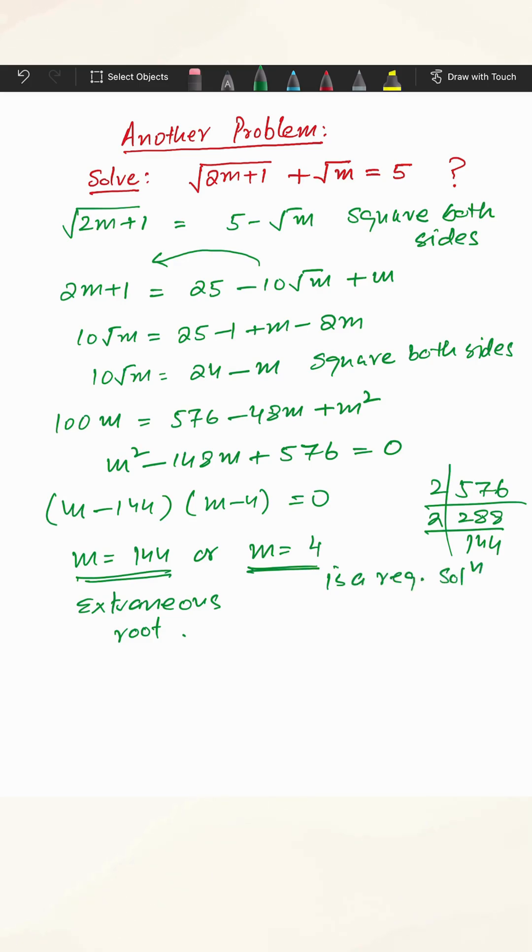If you substitute: square root of 8 plus 1 plus square root of 4 equals 5. That's 3 plus 2 equals 5. Done. And that was the solution. I hope you liked it.